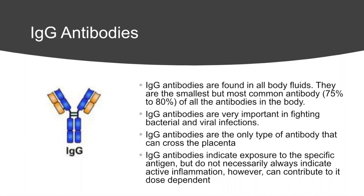IgA antibodies do indicate exposure to a specific antigen, but do not always necessarily indicate active inflammation — however, they may contribute in a dose-dependent manner. IgG indicates exposure to an antigen; for instance, if food sensitivity testing shows IgG antibodies to romaine lettuce, you've been exposed to undigested proteins in romaine lettuce, but it doesn't necessarily mean romaine lettuce provokes an inflammatory immune response.